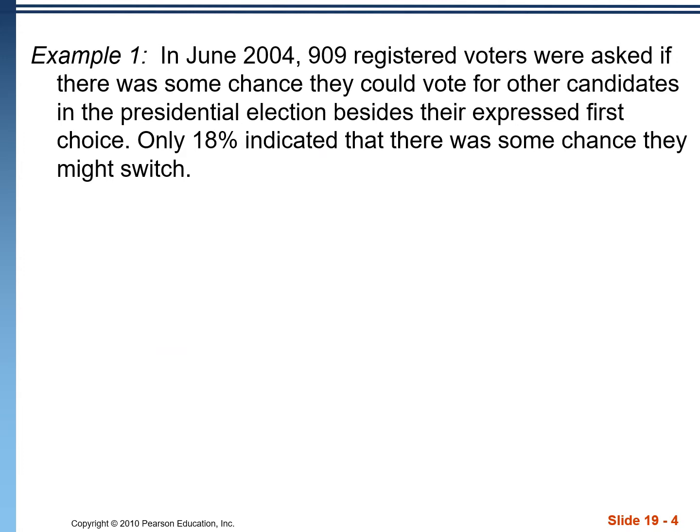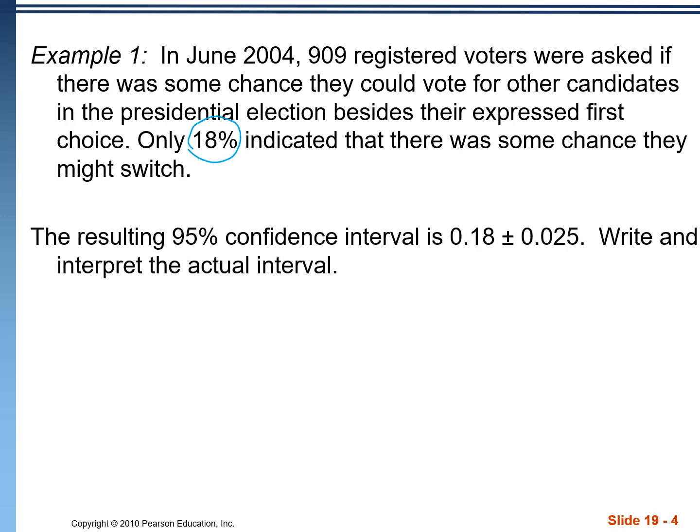For example, in June 2004, 909 registered voters were asked if there was some chance they could vote for other candidates in the presidential election besides their expressed first choice. Only 18% indicated that there was some chance they might switch. In this problem, 18% is our point estimate — that's the starting point for a confidence interval. The resulting 95% confidence interval is 0.18 plus or minus 0.025, where 0.025 is our margin of error.